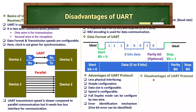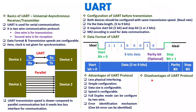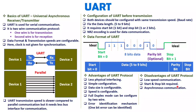The disadvantages of UART include lower communication speed because it is serial communication. Additionally, the start bit, stop bit, and optional parity bit add redundancy to the data frame. Since UART is asynchronous and there is no clock signal, both devices must be configured at the same speed. The redundant bits — start, stop, and parity — all add overhead, which is considered a drawback of the UART protocol.